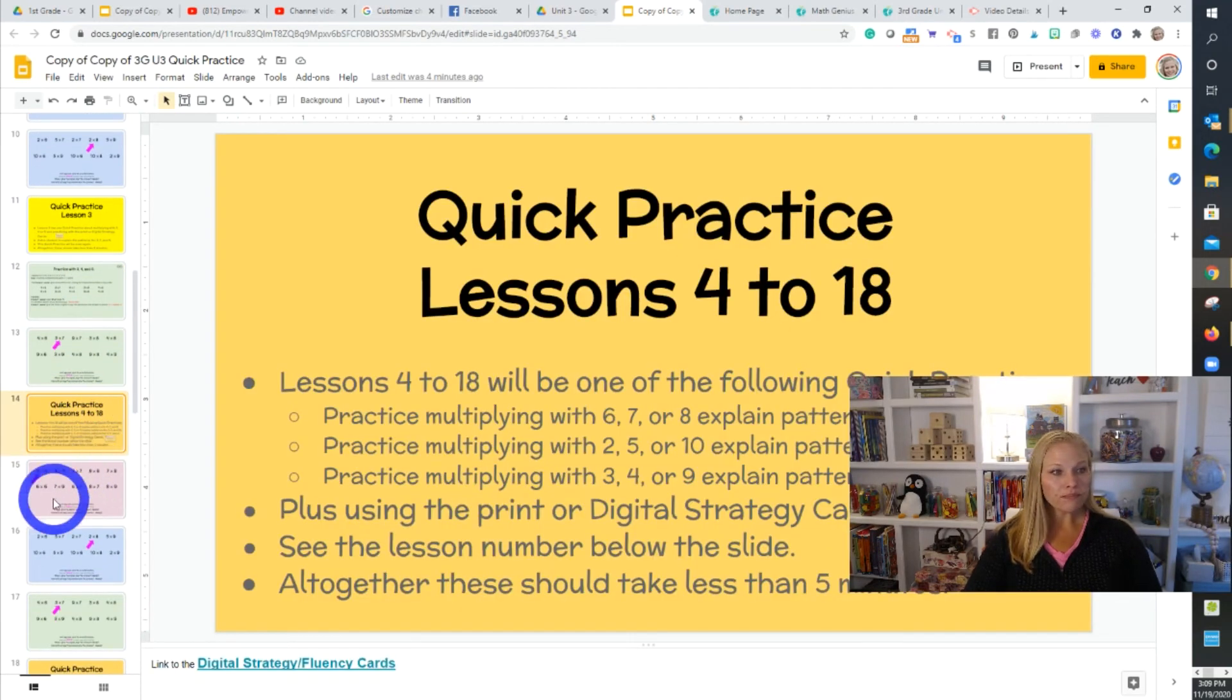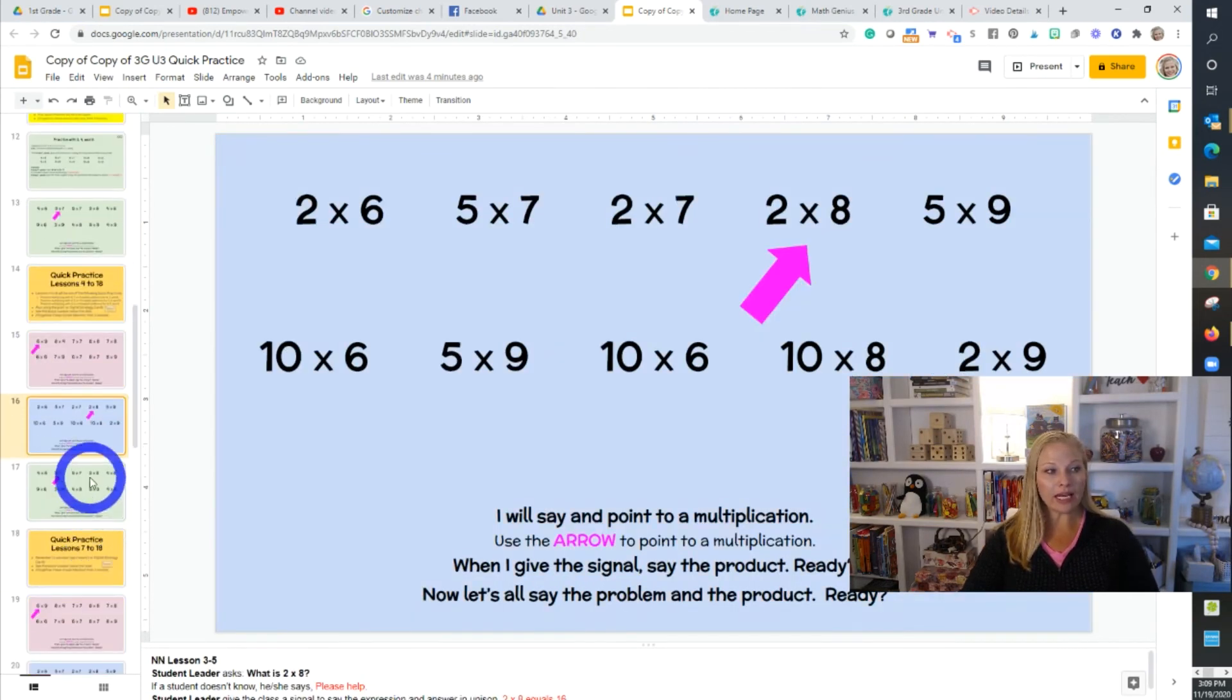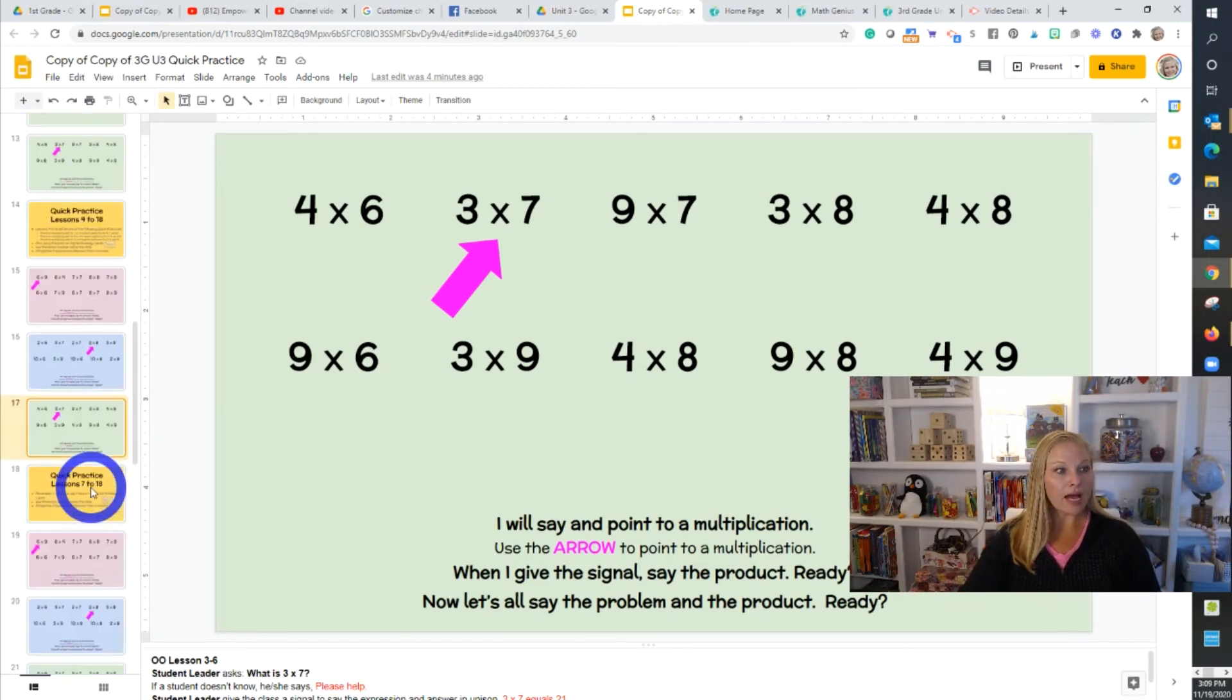Then you get to lesson four. And now we're going to be practicing with our six, sevens and eights. We're looking for patterns that we notice. But again, it's all rehearsal. So we should be getting better at these the more we talk about it, the more we practice our count by's together, the more we practice that five shortcut, we should help us out.